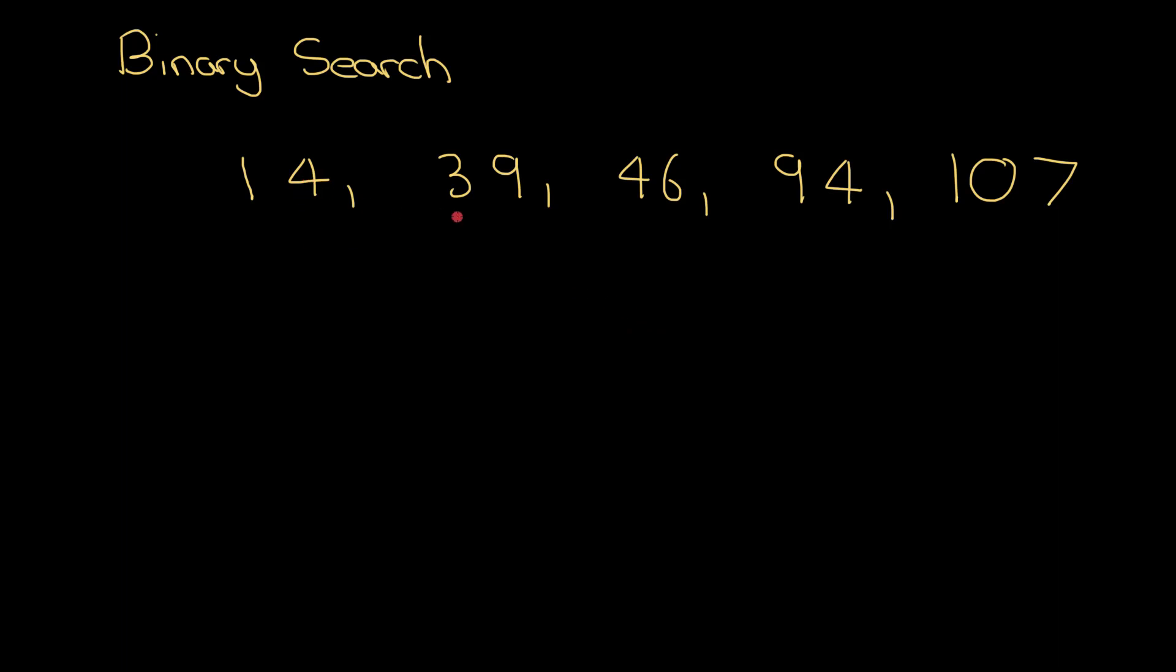What happens is this: I look for the midpoint. I've got 1, 2, 3, 4, 5 numbers in this list, which means the middle one is the third number here, 46. Let's say I'm trying to find the number 39. I ask myself, have I found 39? Is it in the midpoint? Well no, 39 is not 46. But 39 is less than 46. I know these numbers are in order, which means I can eliminate the half of the list that 39 isn't in. Straight away I've got rid of half my data.